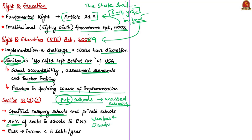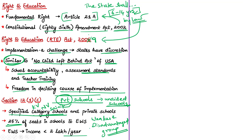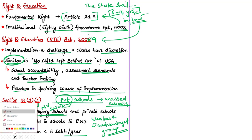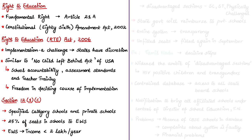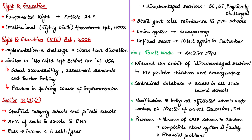According to the author, this provision does not include minority schools. Specified category schools means Kendra Vidyalaya, Navodaya Vidyalaya, Sainik schools and other similar schools. Children belonging to weaker sections means children of parents or guardians whose annual income is lower than the minimum limit specified by the appropriate government — in some states this limit could be 2 lakhs annual income.